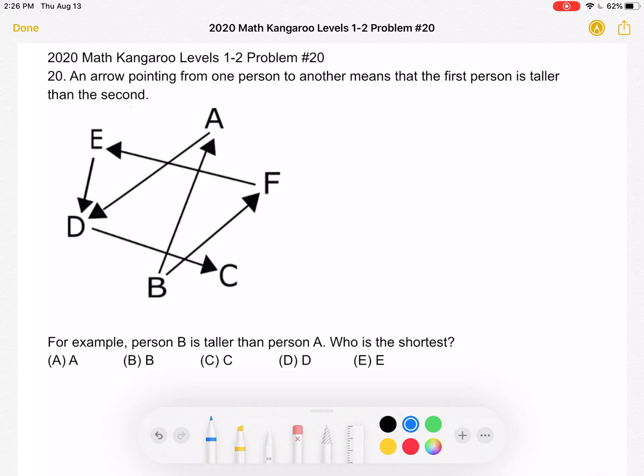Let's start at person B and follow the arrows that go from it. There's an arrow from B to A. And as we already know from the problem, an arrow pointing from one person to another means that the first person is taller than the second. So person B is taller than person A. And I'm going to use this symbol, which means greater than, to show who's taller in a comparison.